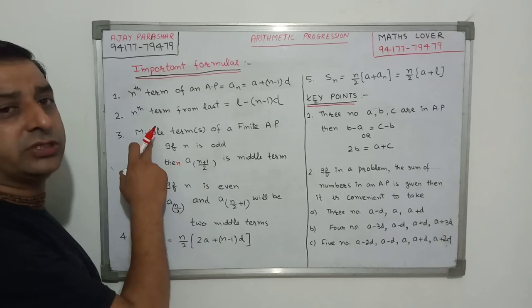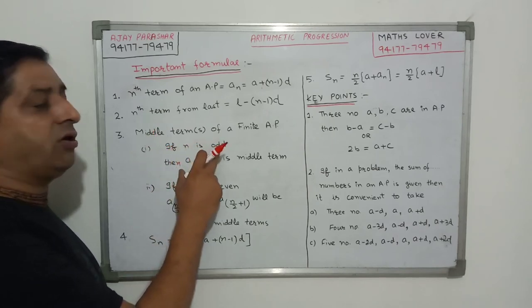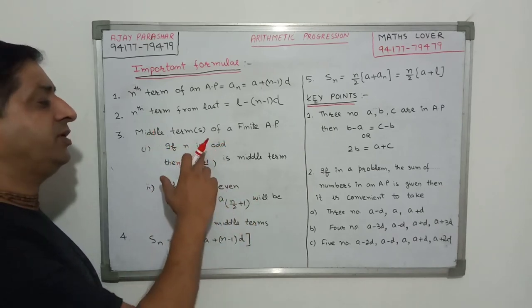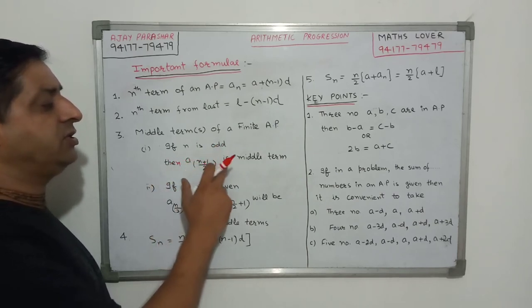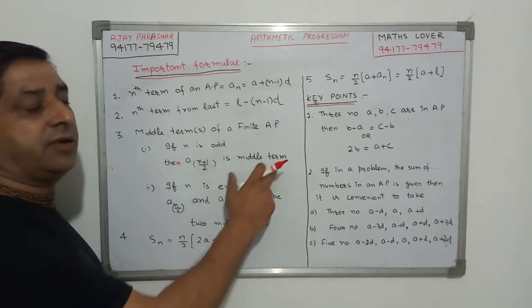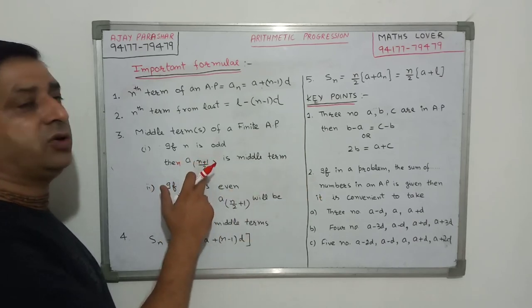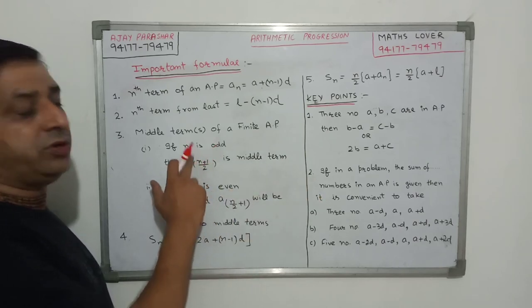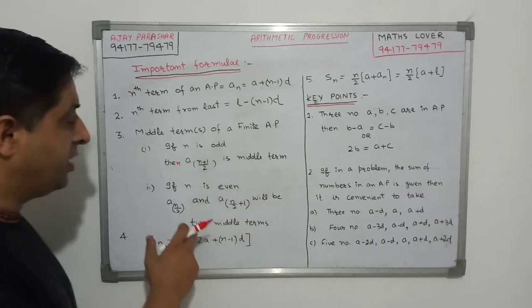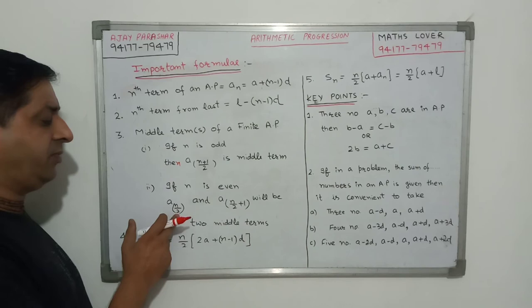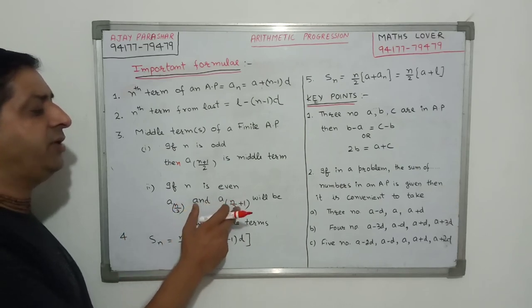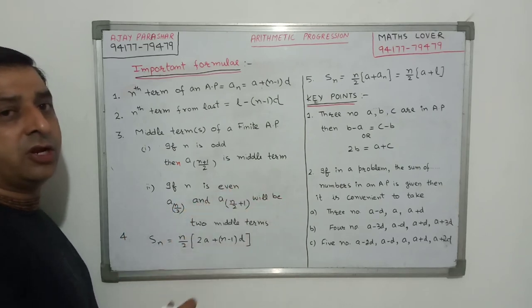Now how to find the middle term of a finite AP? There are two types of questions. If N is odd, if number of term is odd, for example number of term is 17, then A N plus 1 by 2 is the middle term. For example, if N is 17, then 17 plus 1 by 2 means 18 upon 2 be 9th term is the middle term. And if N is even, there are two middle terms. The first middle term is AN by 2 and the second term is AN by 2 plus 1.